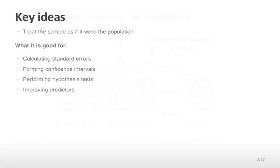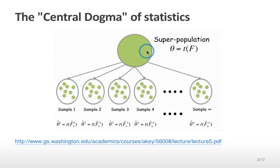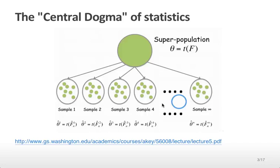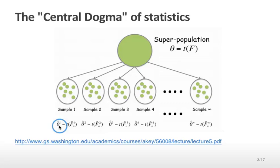This is what we'll call the central dogma of statistics. Suppose you have some population — imagine this is the population of all people in the United States. We can then take samples from that population: sample 1 is a random sample of 100 people, sample 2 is a different random sample of 100 people, and so forth. If we want to estimate something about this population, say a parameter like the mean, theta is equal to the mean.